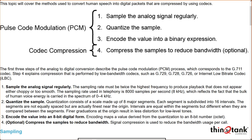What is pulse code modulation quantization? We sample the analog signal. We talked about Nyquist theorem — sample at twice the highest frequency. We talked about that 4,000 hertz or 4 kilohertz frequency that we're dealing with for human perceptible speech, especially on a phone call or in a typical voice conversation.